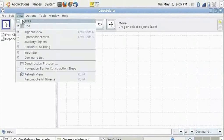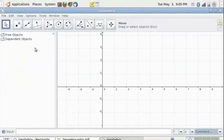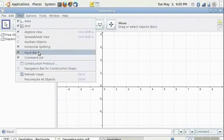We will keep the axis and grid visible for this tutorial. If you choose to close the algebra view or the input bar you may do so by going to view and unchecking the option. Let us remove the input bar from this tutorial.